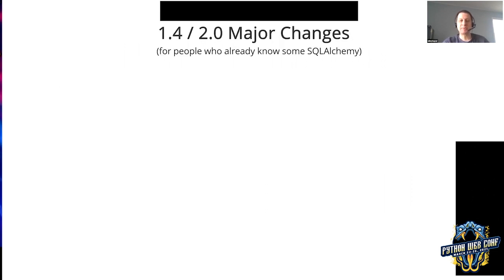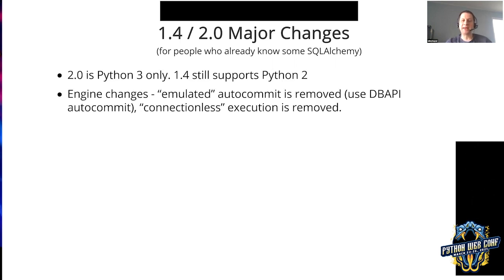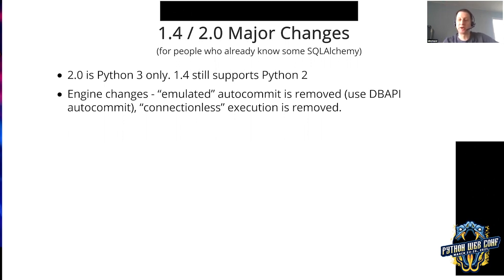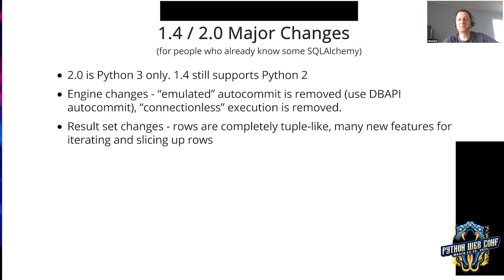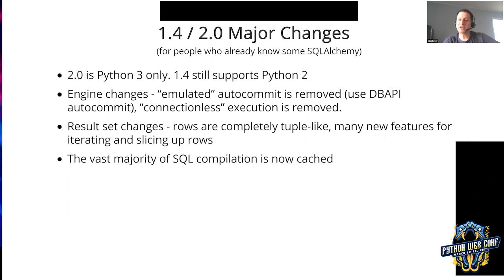The major changes you're going to see: Python 3 only; the engine has been scaled way back to not have 25 ways to do something; emulated autocommit is removed, which would automatically commit certain kinds of statements when used in a certain way; connectionless execution is removed — there's no more statement.execute, you have to say connect or begin, explicitly requesting a unit of connectivity; the result set is way better; and the vast majority of SQL compilation is now cached, which was not the case before. We had an experimental thing called baked query that kind of did caching and was hard to use, but now there's an entirely new caching approach that's awesome.